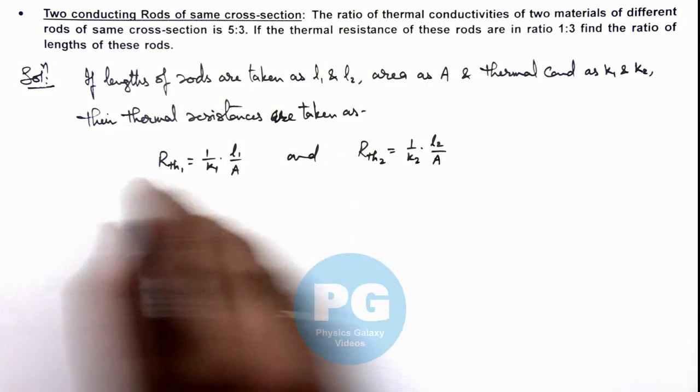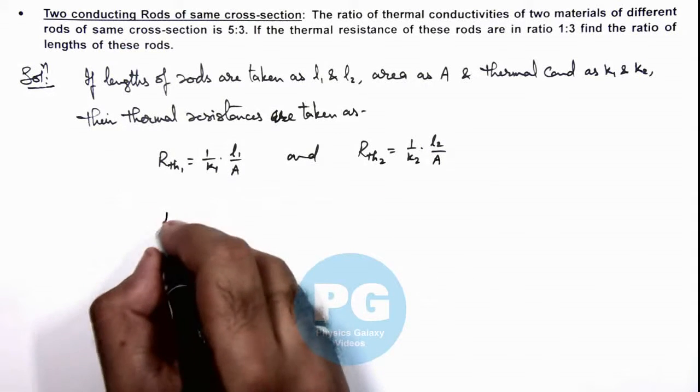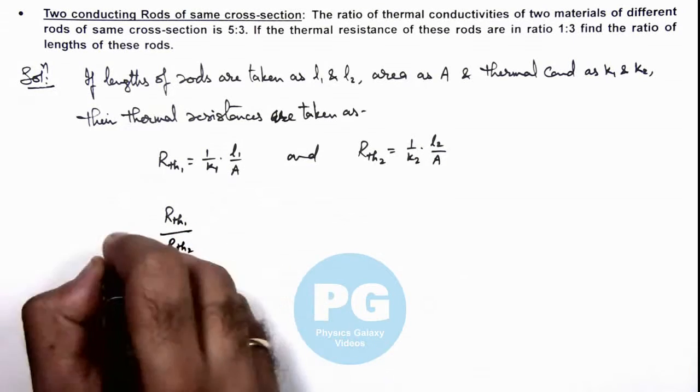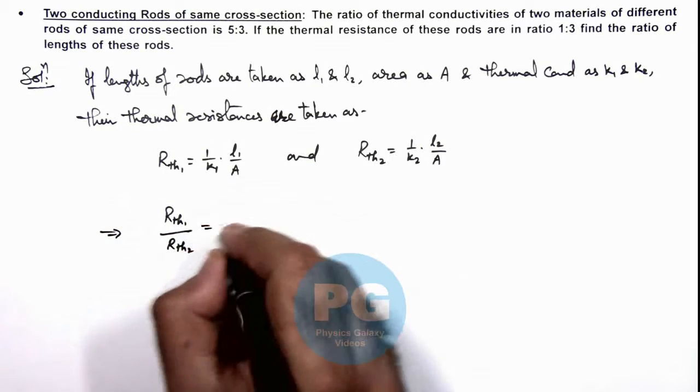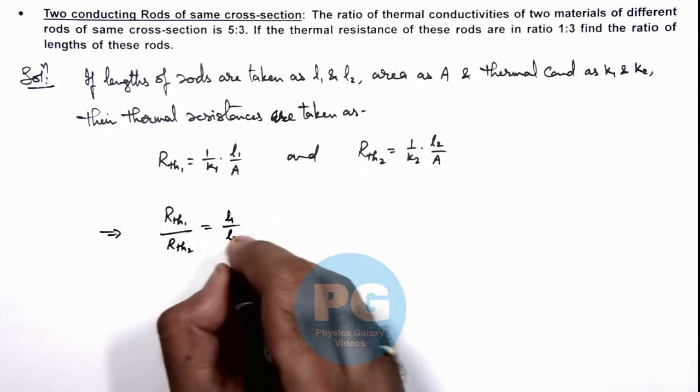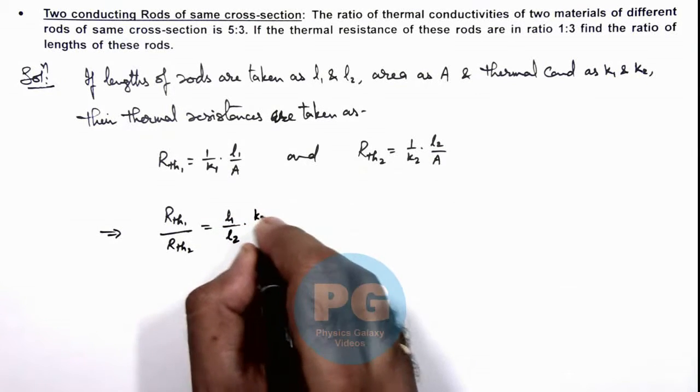If we take the ratio of these thermal resistances, R_thermal1/R_thermal2, then this is equal to - area is common so we can write it as (l₁/l₂) × (k₂/k₁).